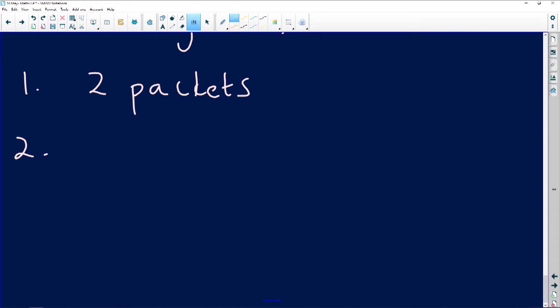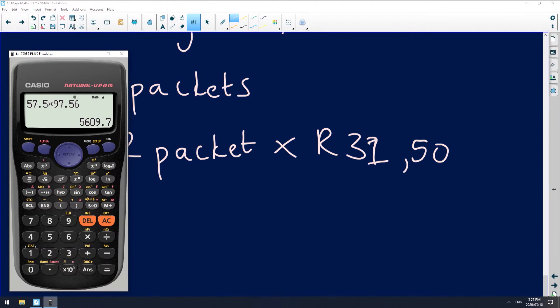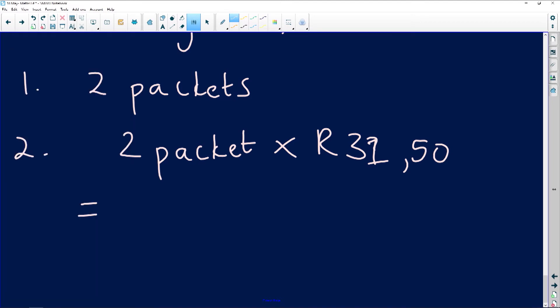So I've got my two packets. It means that if one packet is that much, it's going to be 2 packets times R31.50. So it's R31.50 times 2 packets, which equals R63. Always remember your unit of measurement - we are working with money, which is in rands in this particular case.